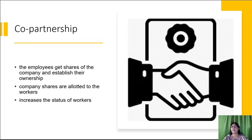Co-partnership is a means of workers' participation in management and is viewed as leading to industrial democracy. Co-partnership allows workers to participate in decision making. Under this method, the employees get shares of the company and establish their ownership. This is made possible because the share of profit is not paid in cash, but company shares are allotted to the workers. Being shareholders of the company, they are entitled to participate in management. This increases the status of workers and leads to improvement in attitude as they realize their responsibility, and relations between workers and management become smooth. They also receive dividend on their shares.